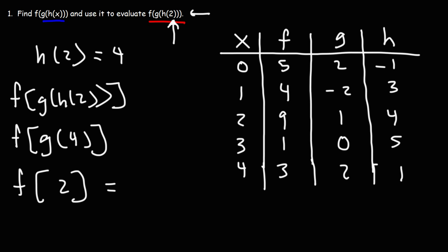So now we need to calculate f of 2. Here's f. Here's 2. So that's how you can evaluate a composition of three functions using a data table.